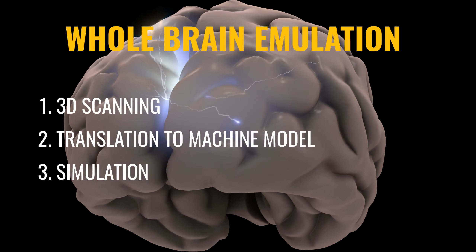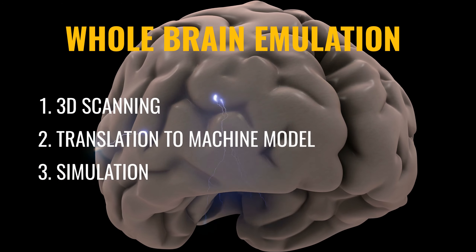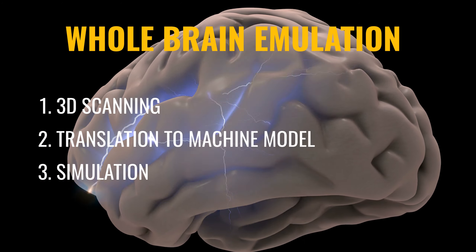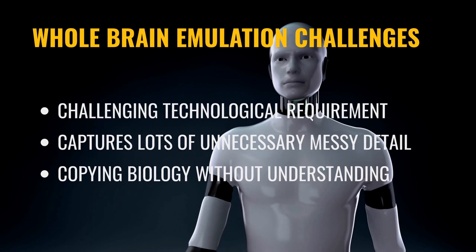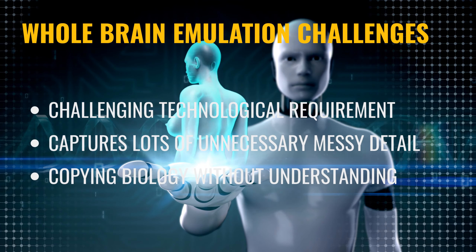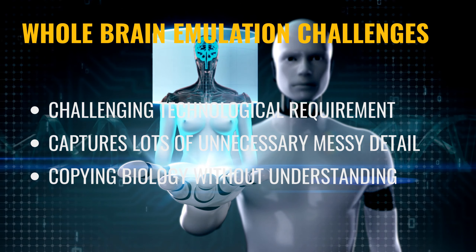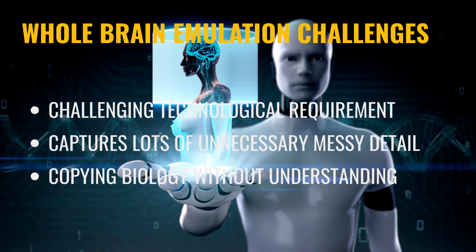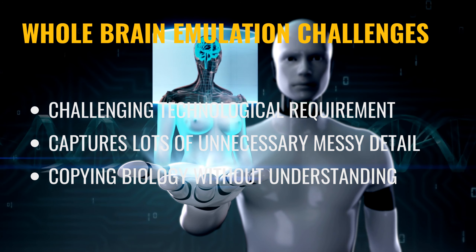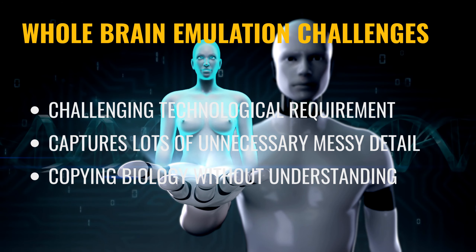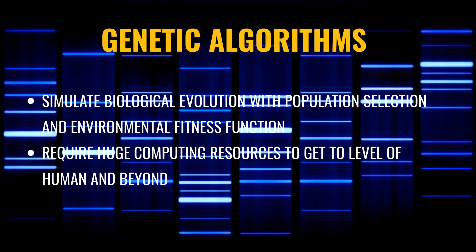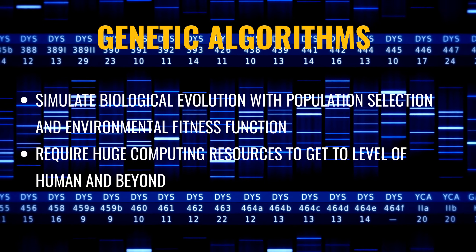The second major approach is whole brain emulation. This involves first scanning the brain, including post-mortem vitrification, slicing, and scanning. Then, based on the raw data, create a 3D reconstruction of the brain and translate the representation to a machine model. Finally, we simulate the model with large compute to extend it beyond human intelligence. This can be challenging due to the technological requirements involved in scanning the brain at such high resolution. It also could capture lots of unnecessary messy detail from evolution that does not necessarily contribute to intelligence, and may impede iterating the model to achieve AGI.